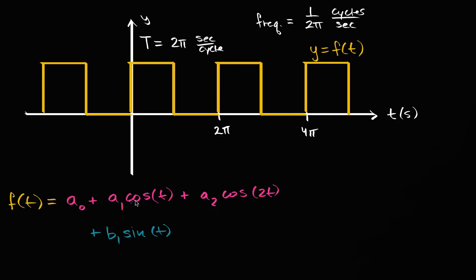This has a frequency of one over two pi. This has twice the frequency. This has a frequency of one over pi. And then a sub three times cosine of three t.